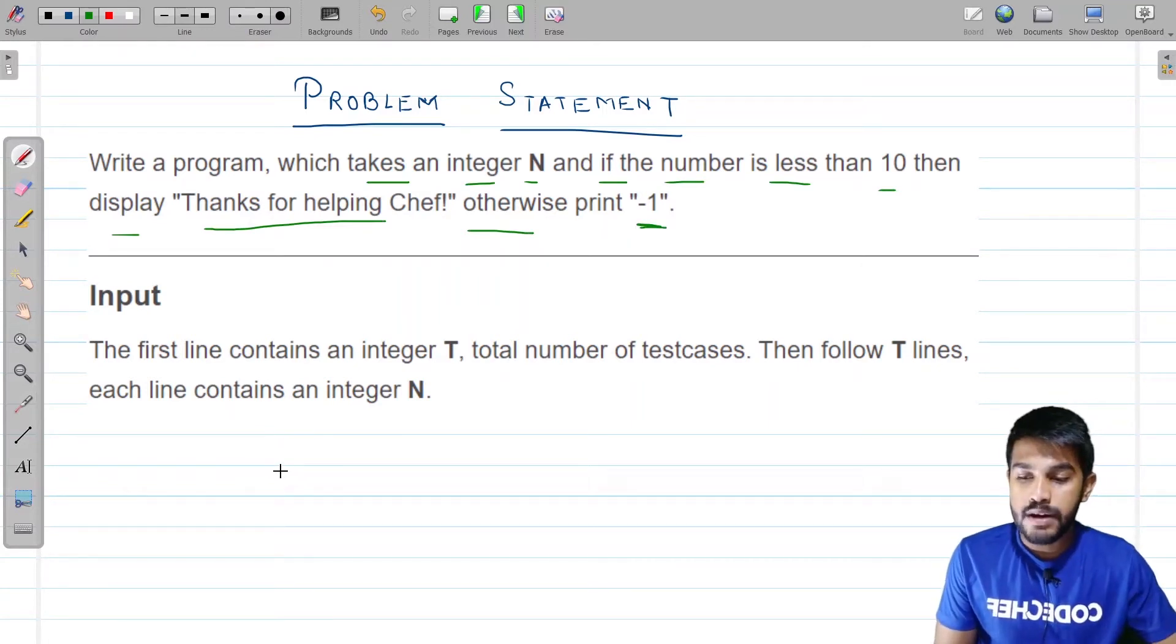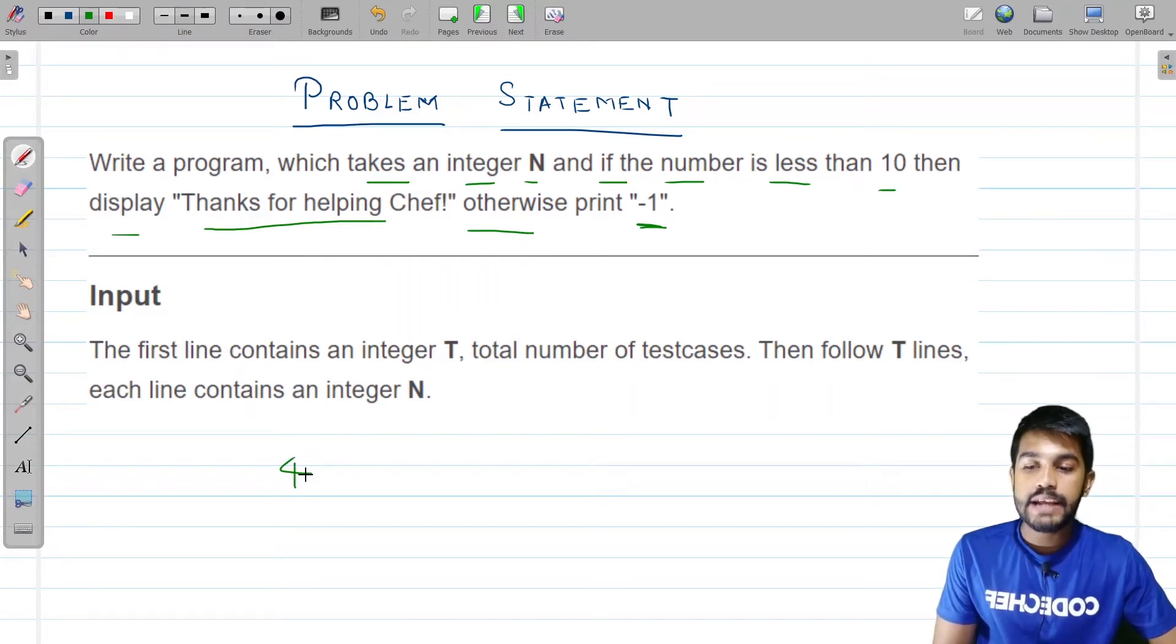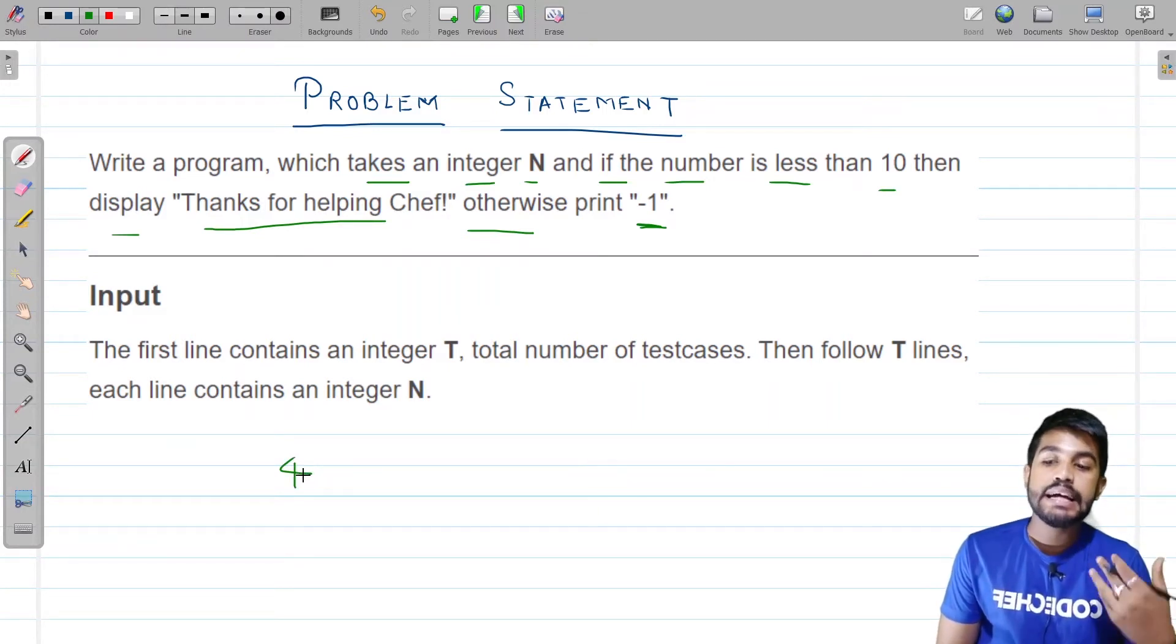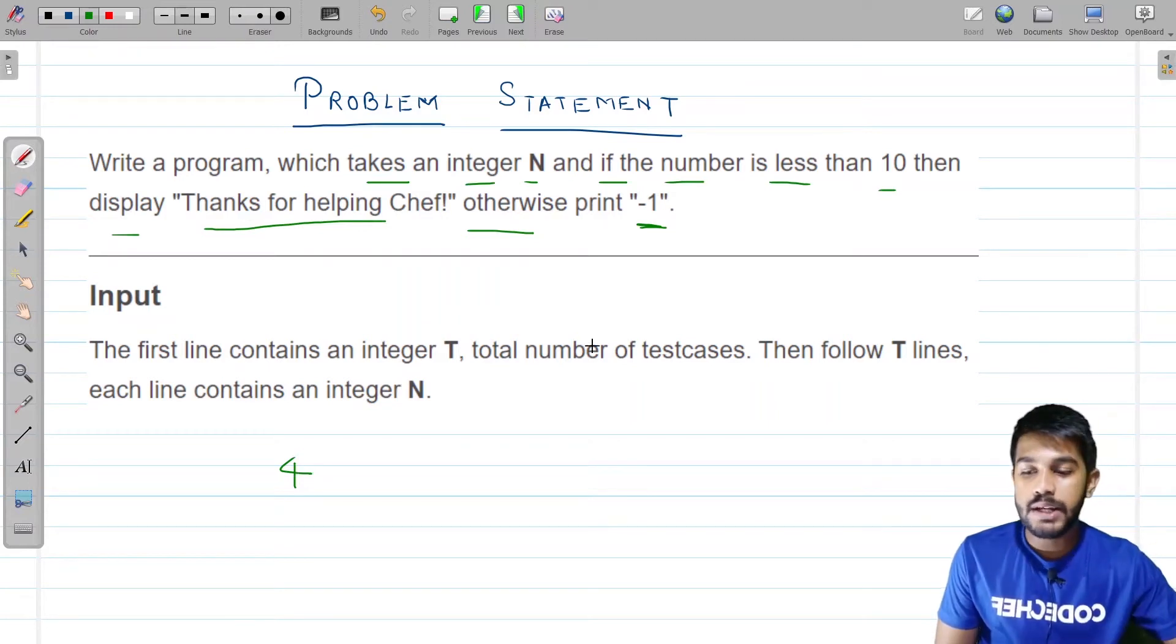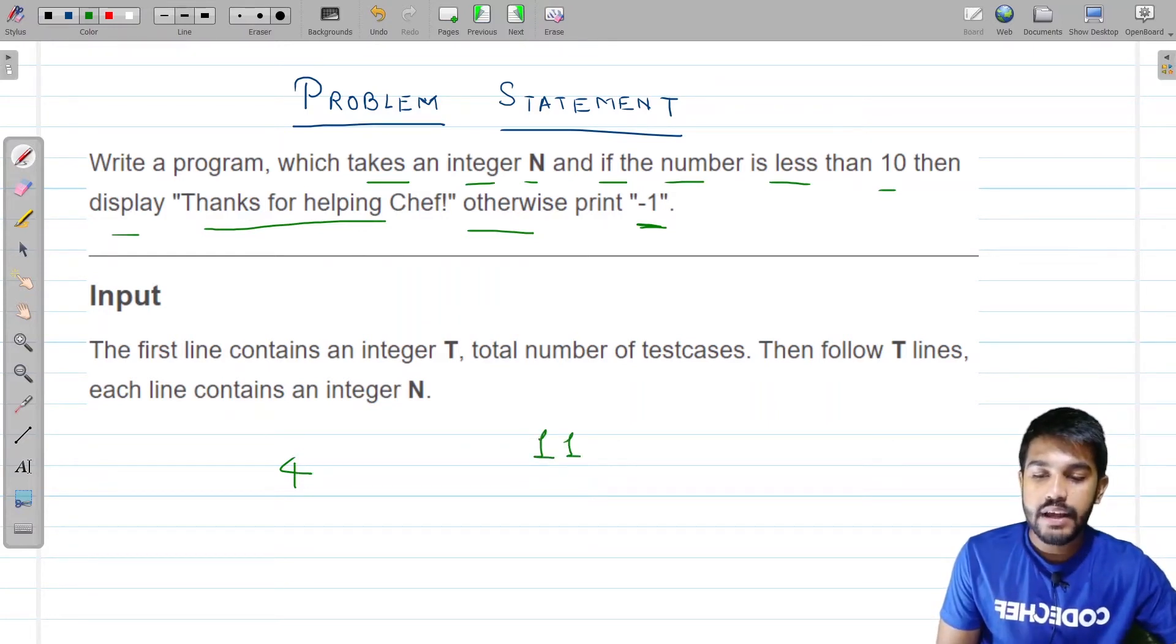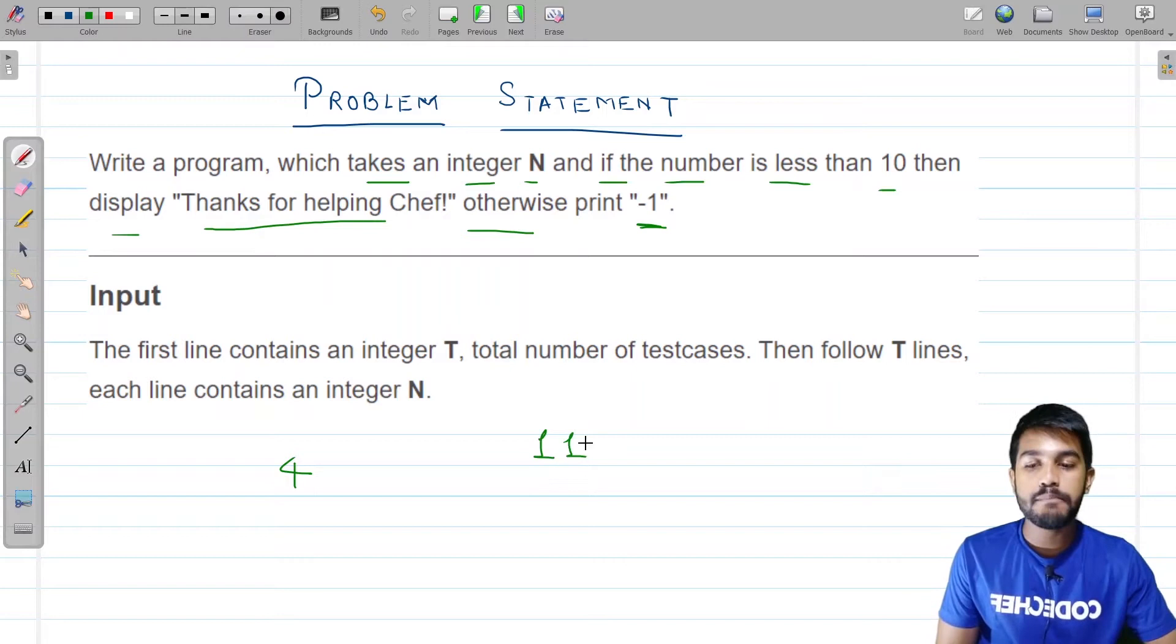Suppose the number is 4, then we need to print thanks for helping chef. If the number is 11 then we need to print minus 1.